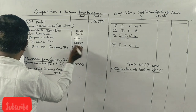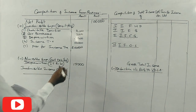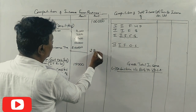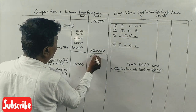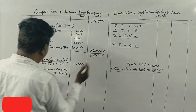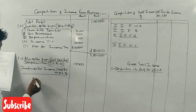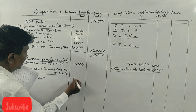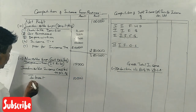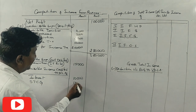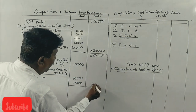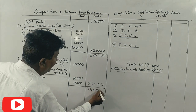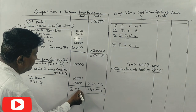The profit is two lakhs. Now, the inadmissible incomes: interest from government securities is 10,000, and short-term capital gain is 15,000 — total inadmissible incomes are 25,000. After adjustments, this gives us income from business of 3,40,000.